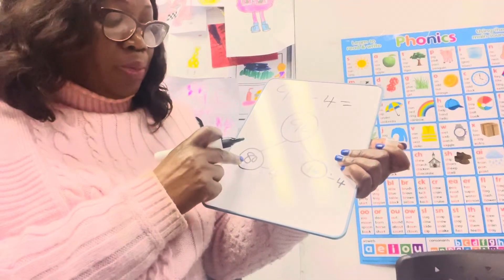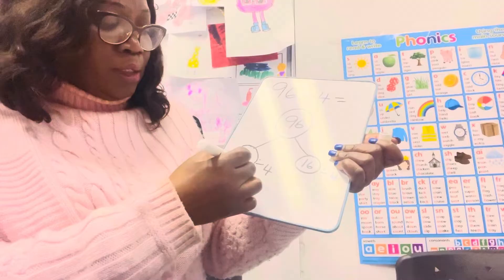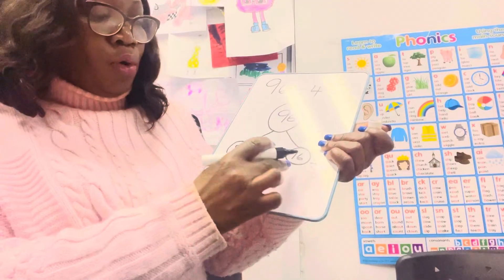But you know your 4 times table, and you know 8 divided by 4 is 2. So 80 divided by 4 will be 20.